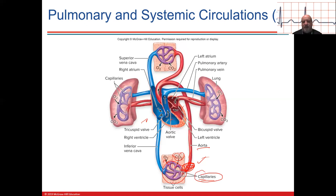The inferior vena cava and superior vena cava bring all deoxygenated, carbon-dioxide-heavy blood from the upper and lower body into the right atrium. Then the blood drains into the right ventricle via a valve.